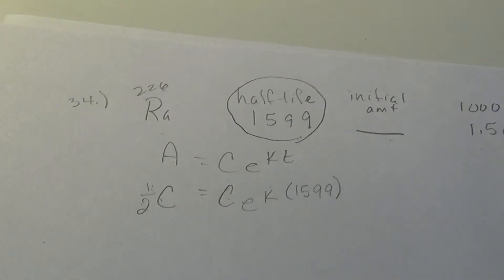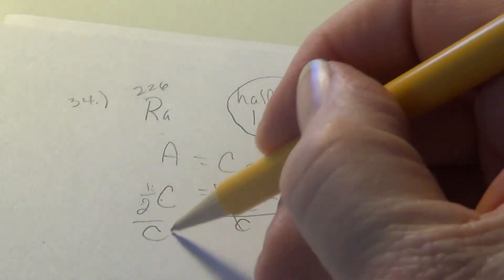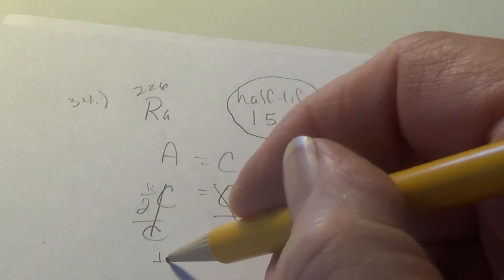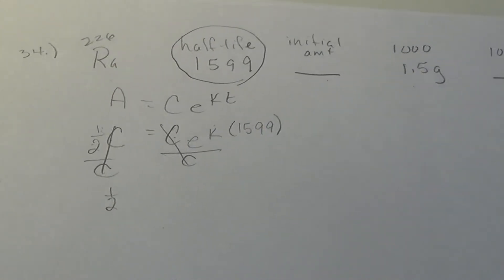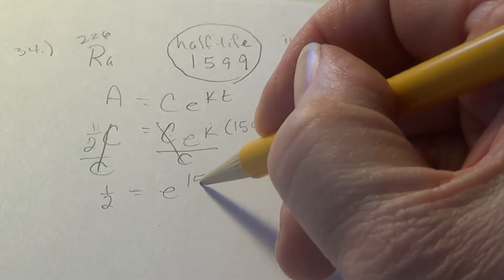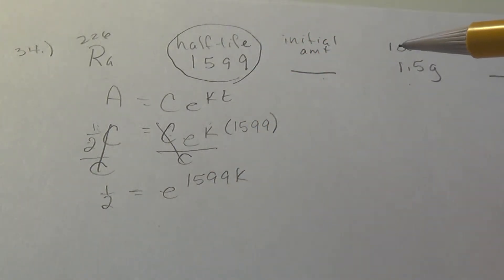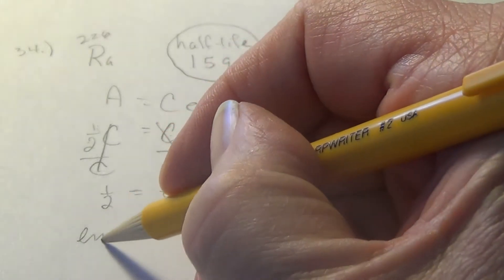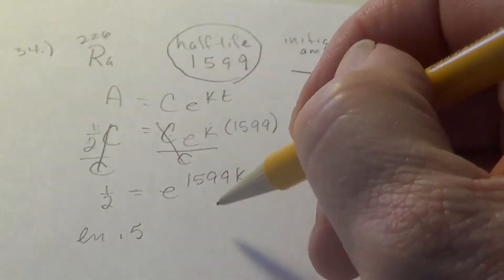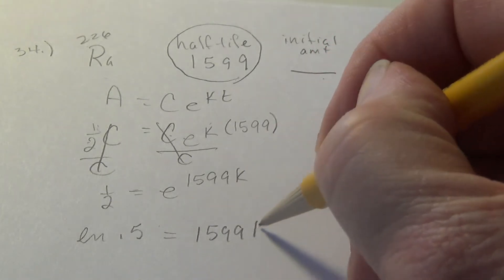So with our calculator, or first with our algebra, divide both sides by C, and we have one-half equals E to the K, or 1599 K. And if we take the LN of 0.5 and divide it, that will equal 1599 K.